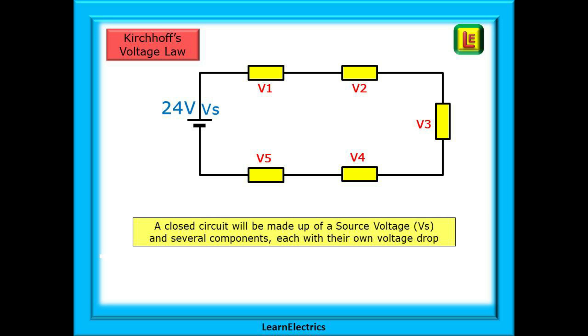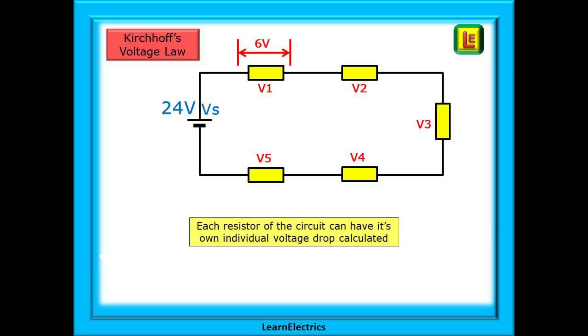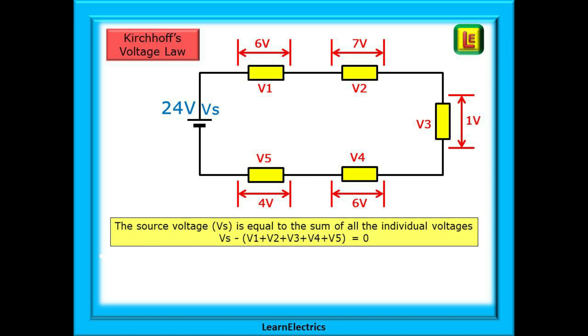A closed circuit will be made up of a source voltage Vs and several components, each with their own voltage drop shown here as V1, V2, etc. Each resistor of the circuit can have its own individual voltage drop calculated. If we know the current in the circuit and we know the individual resistance, we can calculate the individual voltage drop. Kirchhoff's voltage law states that the source voltage is equal to the sum of all the individual voltages.